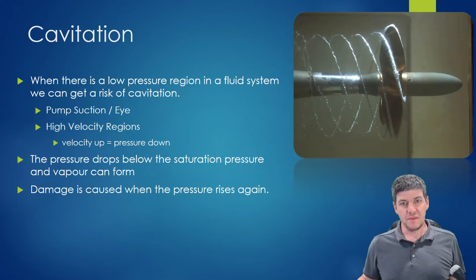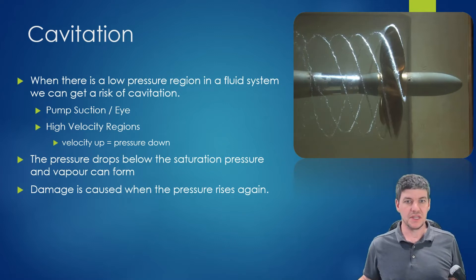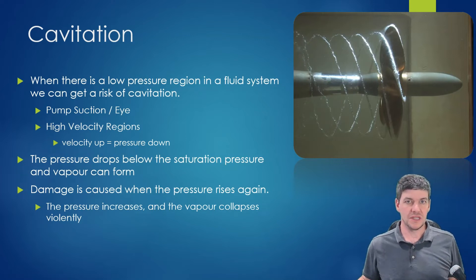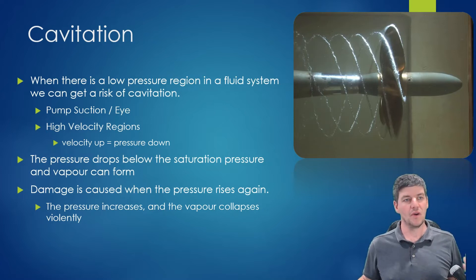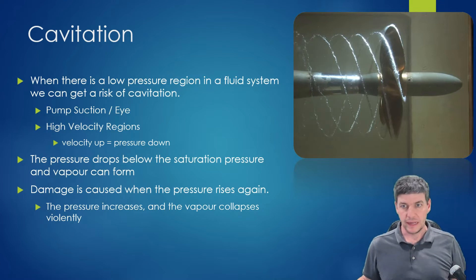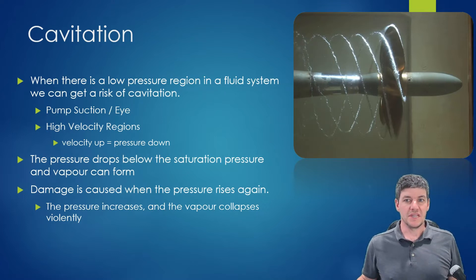A vapor bubble forms, and then when the pressure rises again, that bubble collapses. The surrounding fluid rushes in to fill that space and impacts against the surface. Over time, repeated impacts create damage — the pitting you typically see in impellers and other components — indicating that cavitation has occurred.